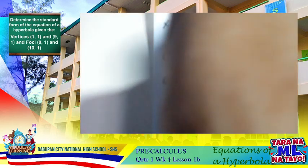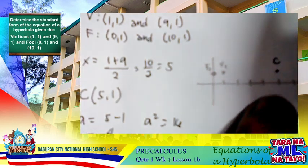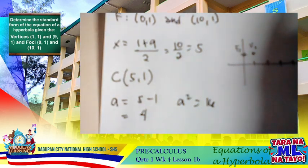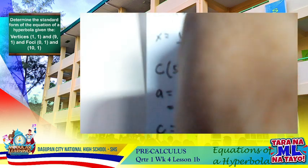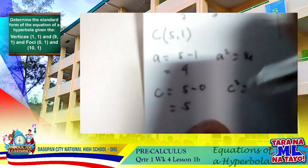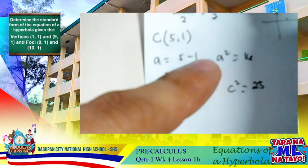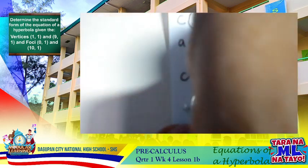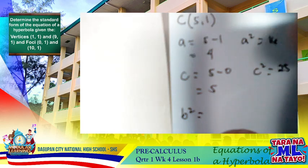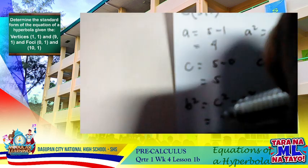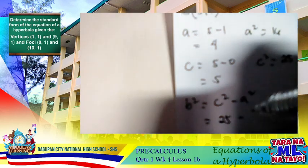Now we find 'c', the distance from center to focus. The center is at x = 5 and F₁ is at x = 0, so c = 5 − 0 = 5, and c² = 25. To find b², we use the formula b² = c² − a², so b² = 25 − 16 = 9.